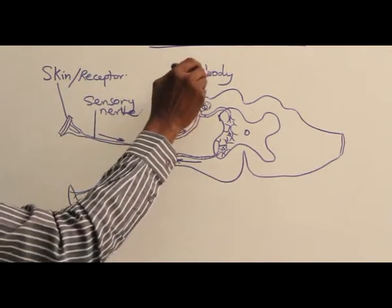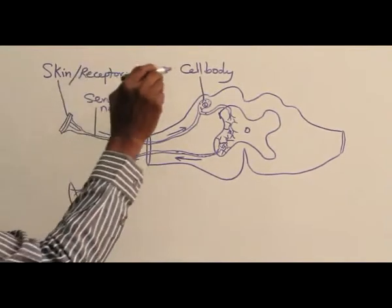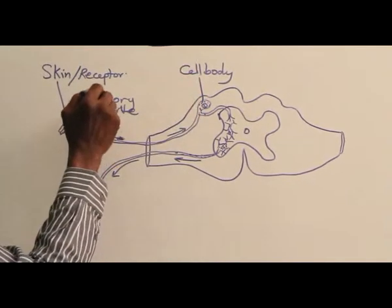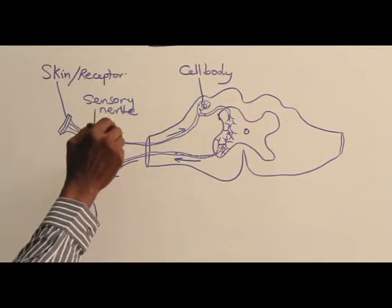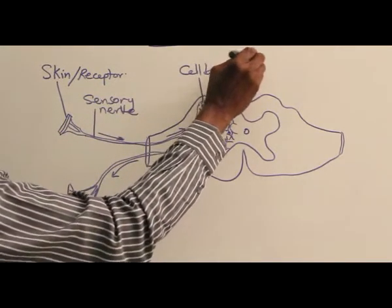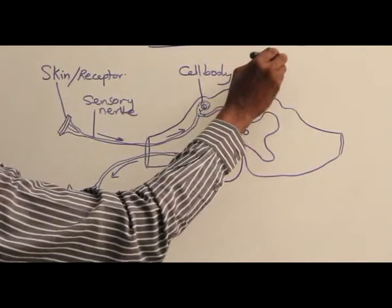The sensory nerve has cell body. It can only be cell body here if you call this one sensory nerve. If you call it sensory neuron, it becomes ganglion.